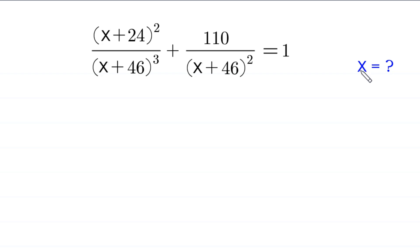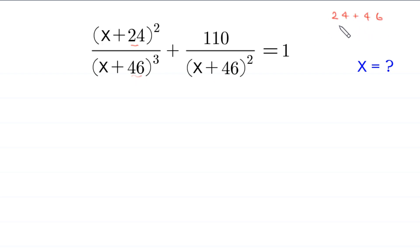So let's start. Since the average of 24 and 46 — that is, 24 plus 46 divided by 2 — is equal to 35.